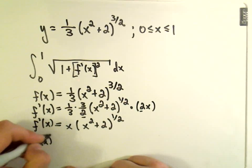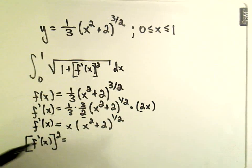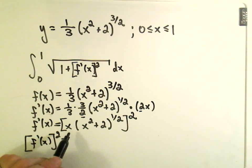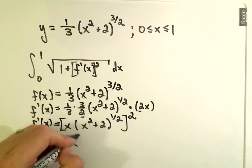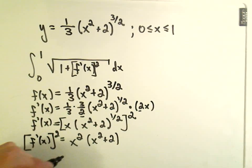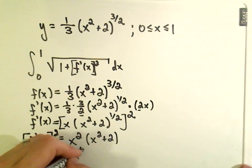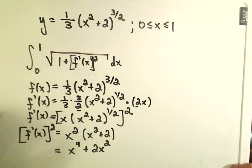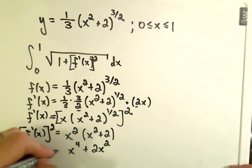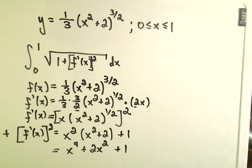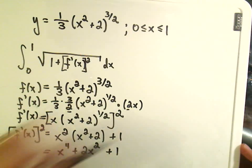If I take the derivative and square it, we have to square both pieces, so we'll get x squared. If you multiply the exponents, or you're squaring the square root, you'll just get x squared plus 2. If we multiply that, we get x to the fourth plus 2x squared. The last thing we have to do is add 1 to that. If I add 1 to it, we'll just add 1 and add 1 there.